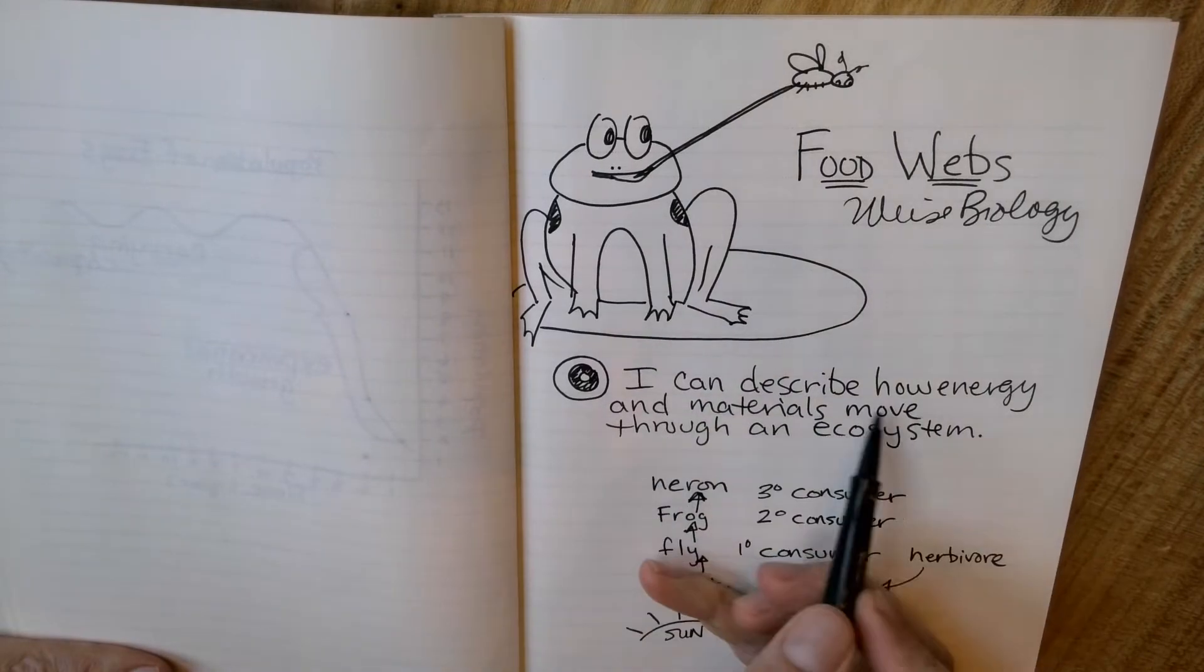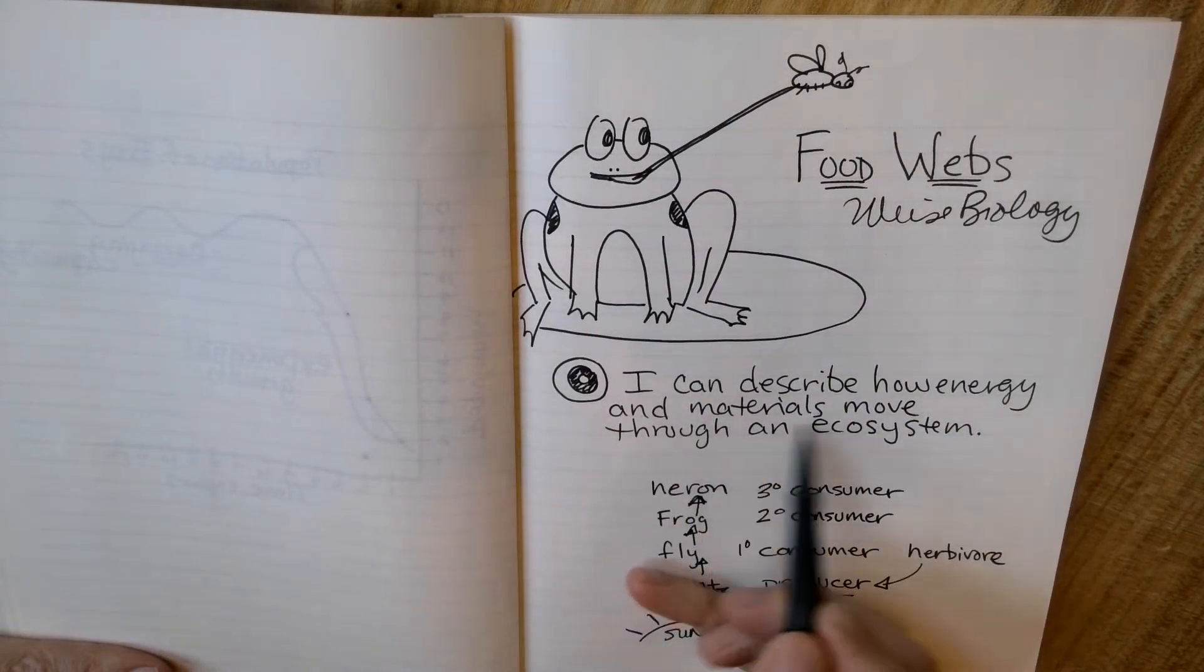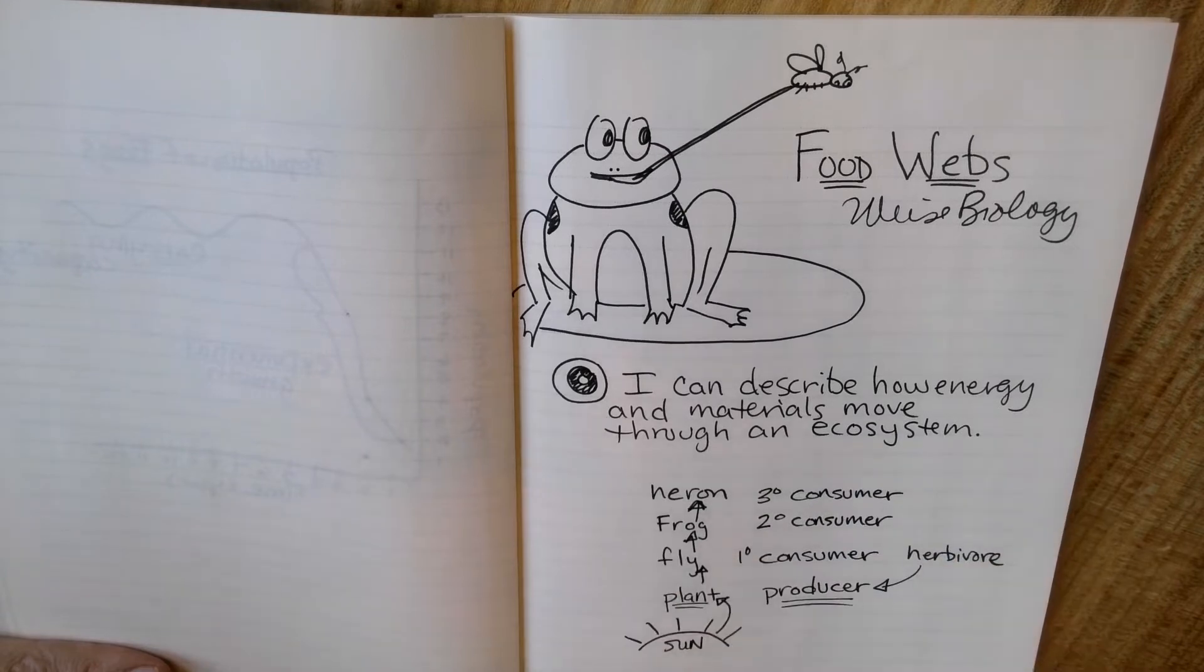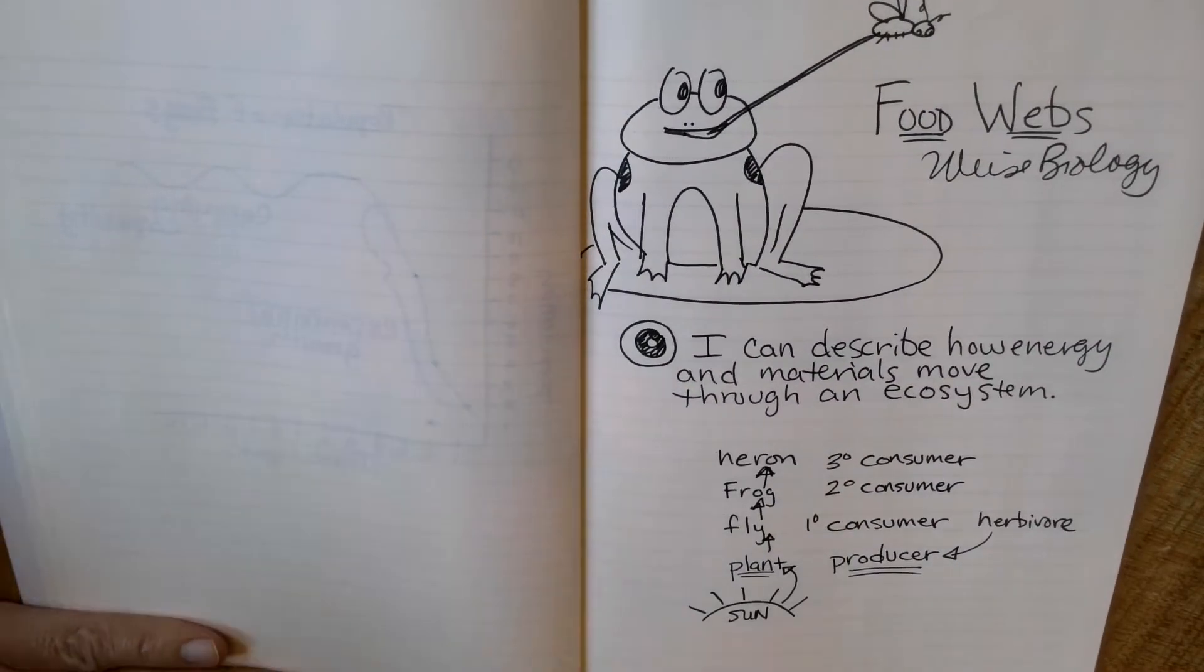I'm working on the learning target: I can describe how energy and materials move through an ecosystem. We'll talk a little bit about how matter cycles and energy flows through the abiotic and biotic factors in an ecosystem.